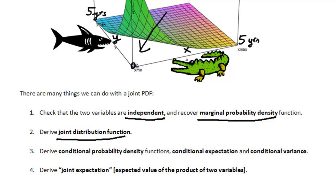We can derive the joint distribution function. We can find out conditional probability densities, conditional expectations, conditional variances. And last but not least, we can find the expected value of the product of the two random variables.